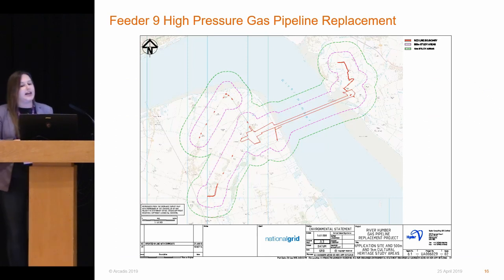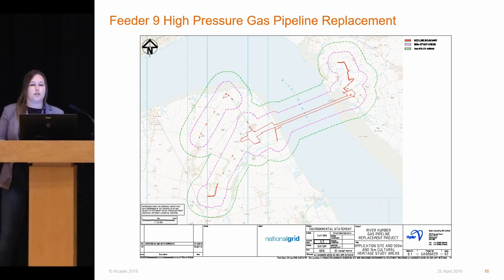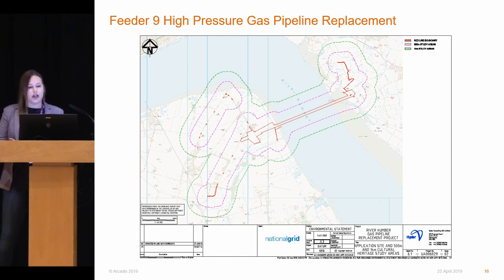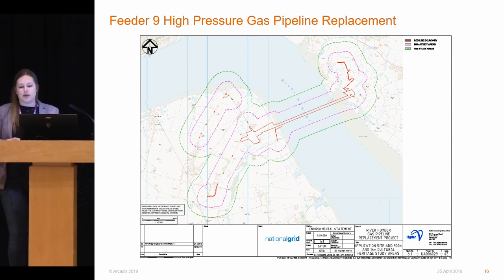So, the first project we'll be looking at today is a national bridge project. It was required to replace the existing high-pressure gas pipeline, Feeder Number 9, which passes under the Humber Estuary between Goxhill in North Lincolnshire and Paull in East Riding Yorkshire. Because this was a replacement of existing infrastructure, there were various constraints about the location. It needed to connect to the existing above-ground installations on each side of the river. The primary aim was to create a bored tunnel under the Humber at a deeper depth to avoid impacts from scouring of the riverbed, which was eroding the current pipeline.